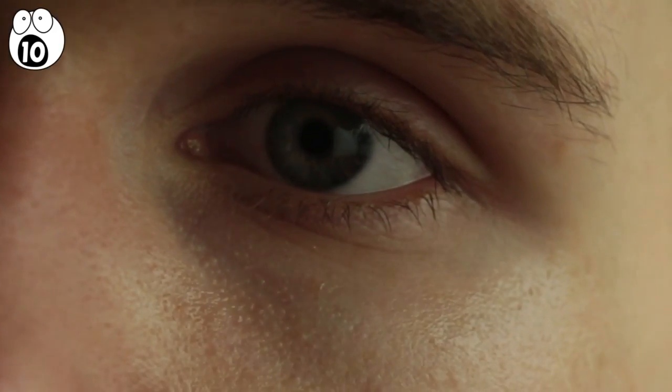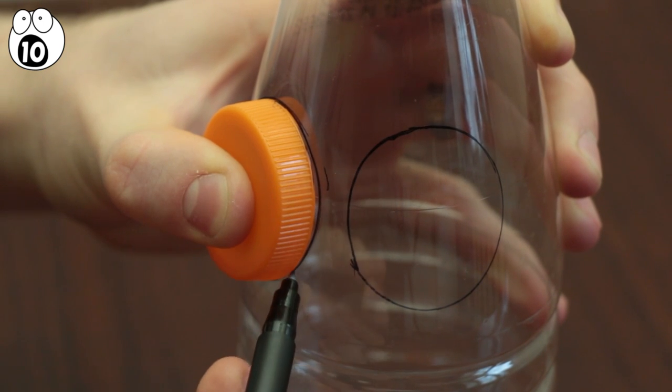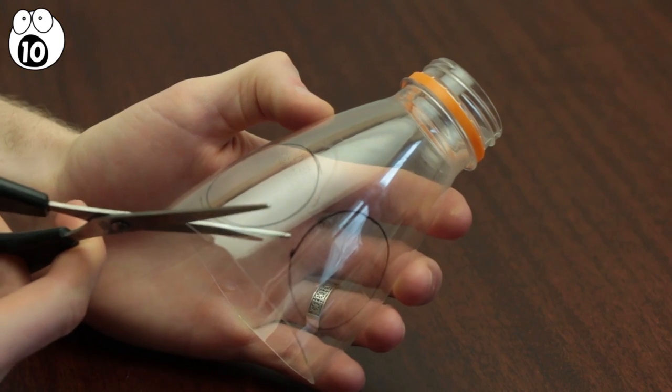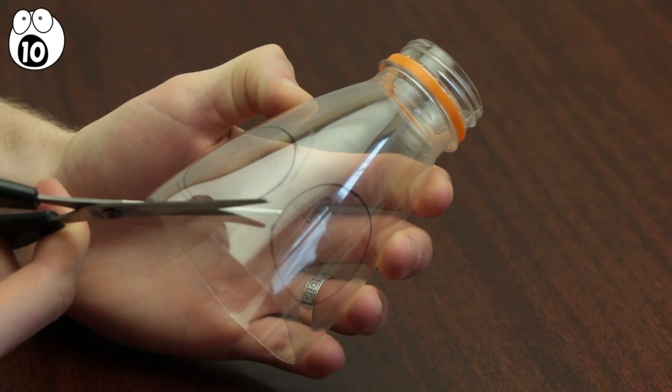If you have bad eyesight, this hack is for you. Simply trace around the curved part of a bottle using something circular like this. You can use the cap of the bottle itself or something larger like a cup. Cut out two of these circles.